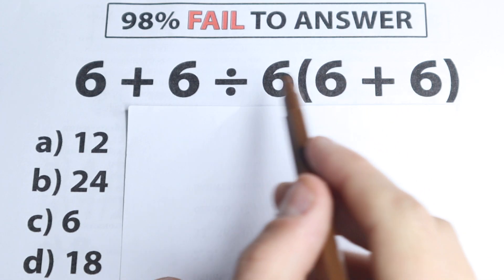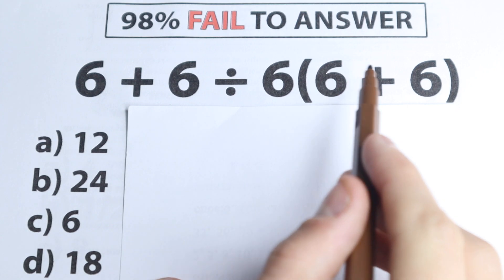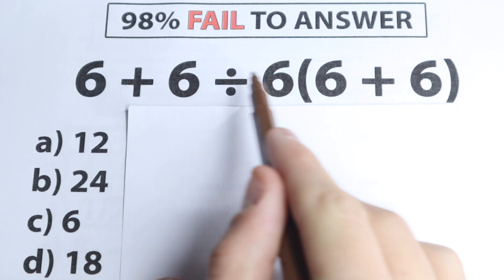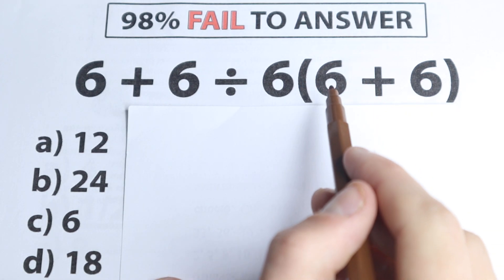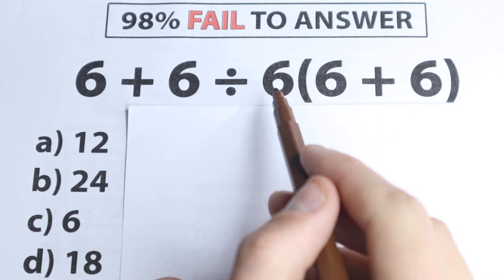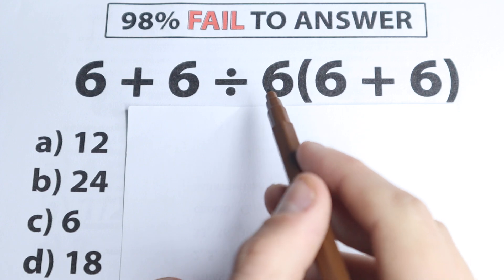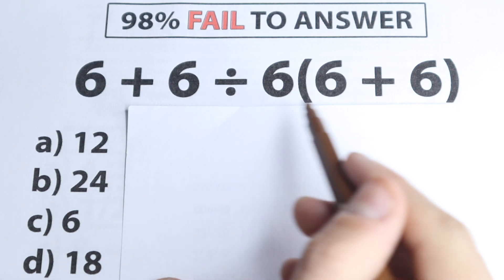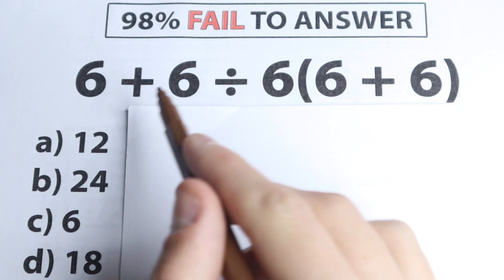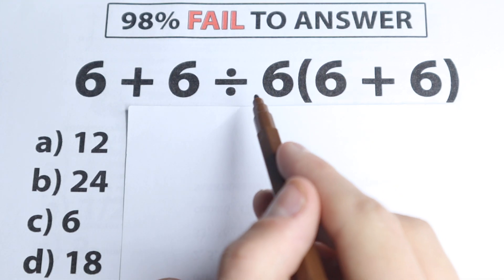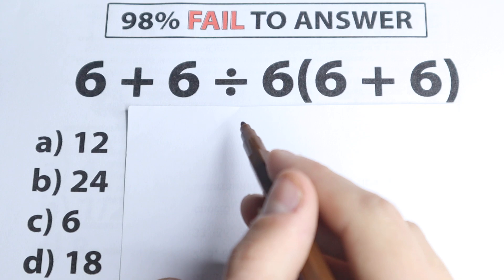So it's like a challenge for us. We have all the time this 6 — we have addition, division, multiplication, and we have parentheses. As you can see, everyone learned this stuff in third grade or second grade; everyone knows about these operations right here. But what is the correct answer?